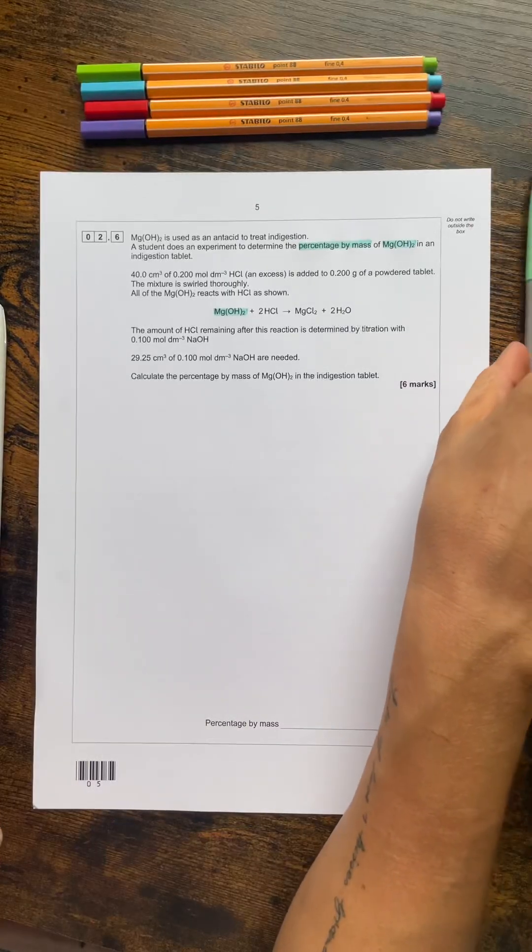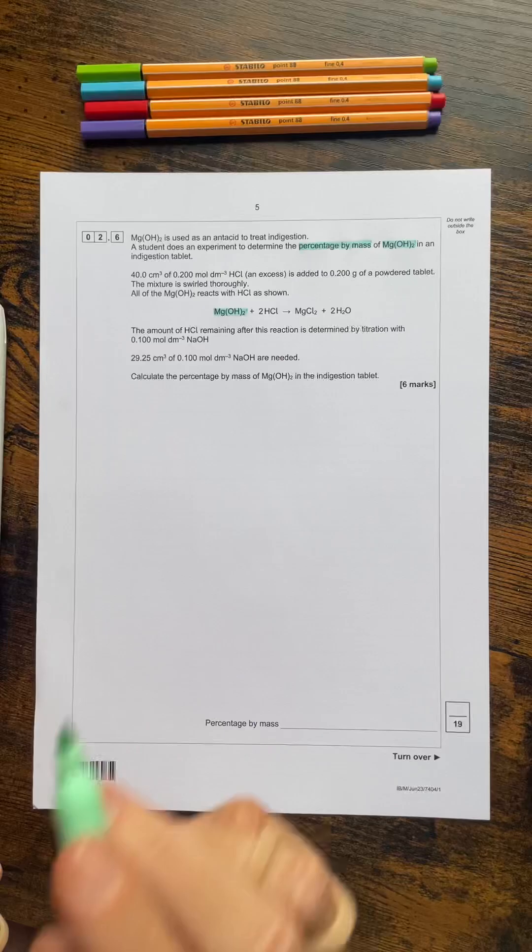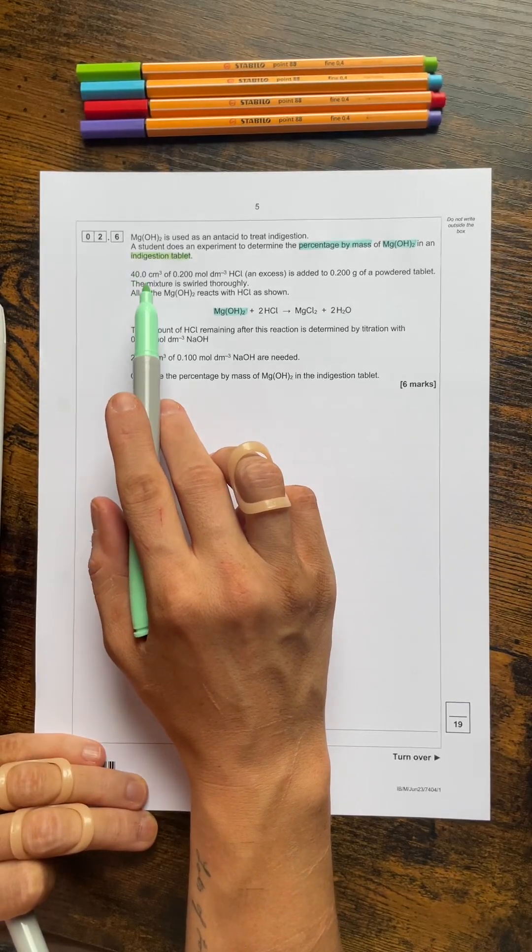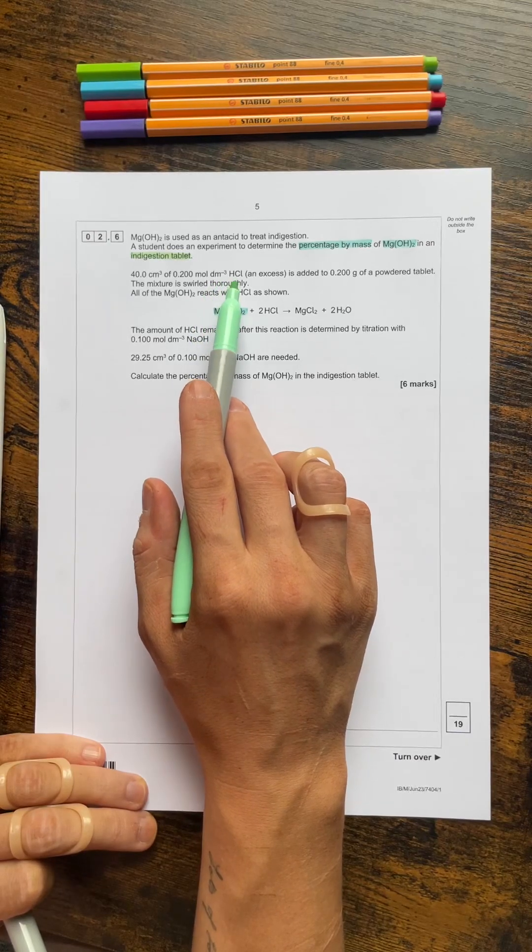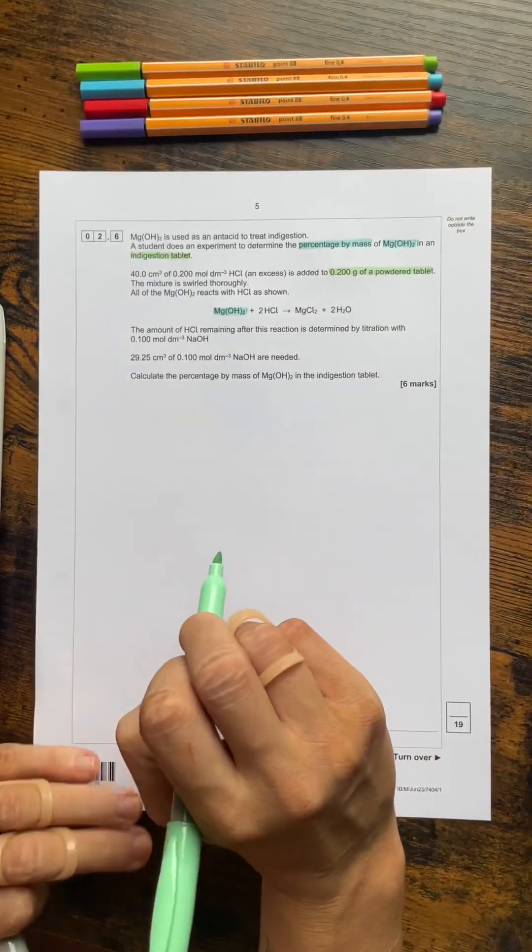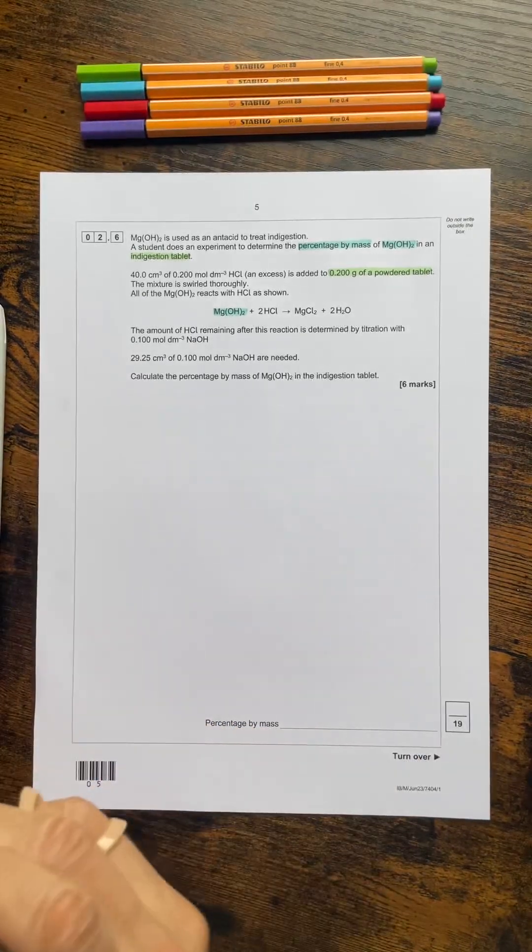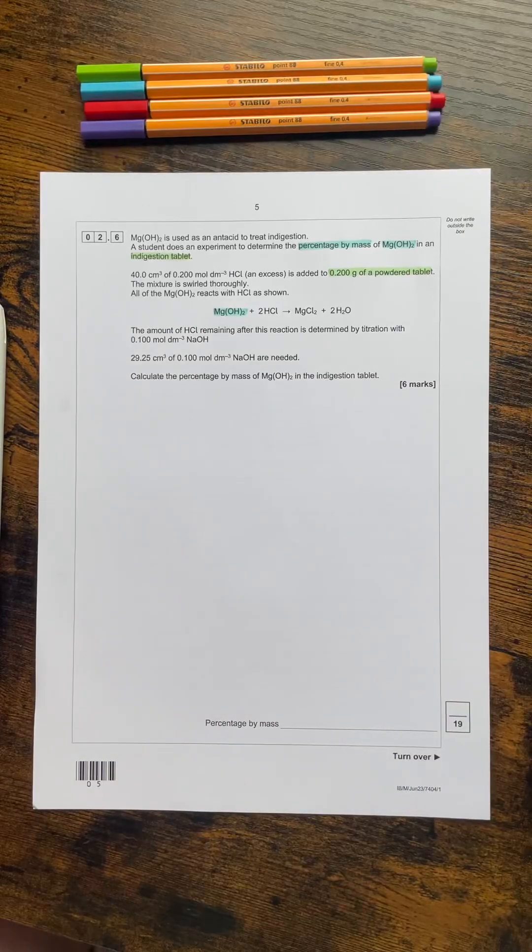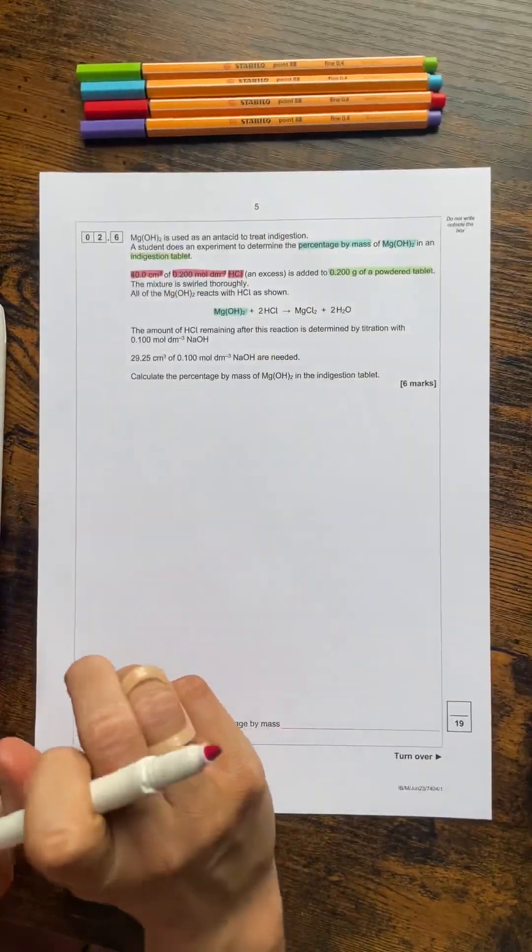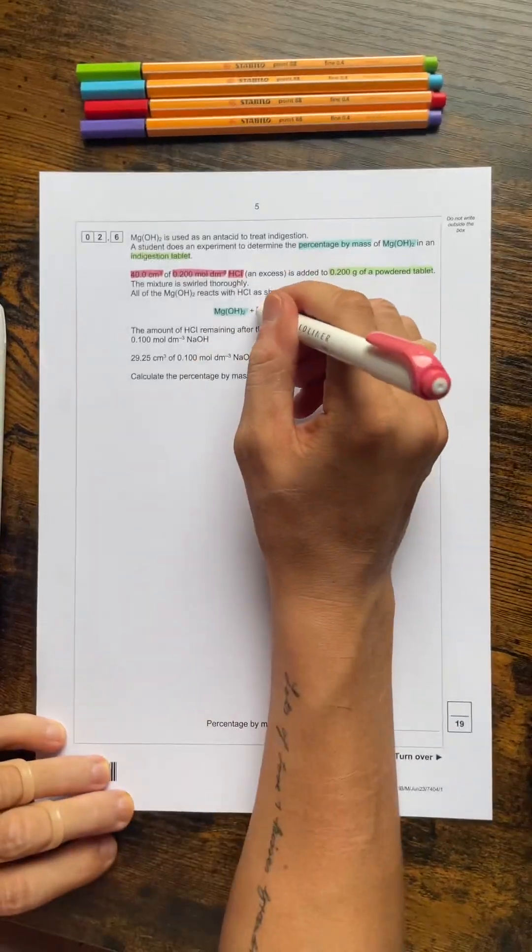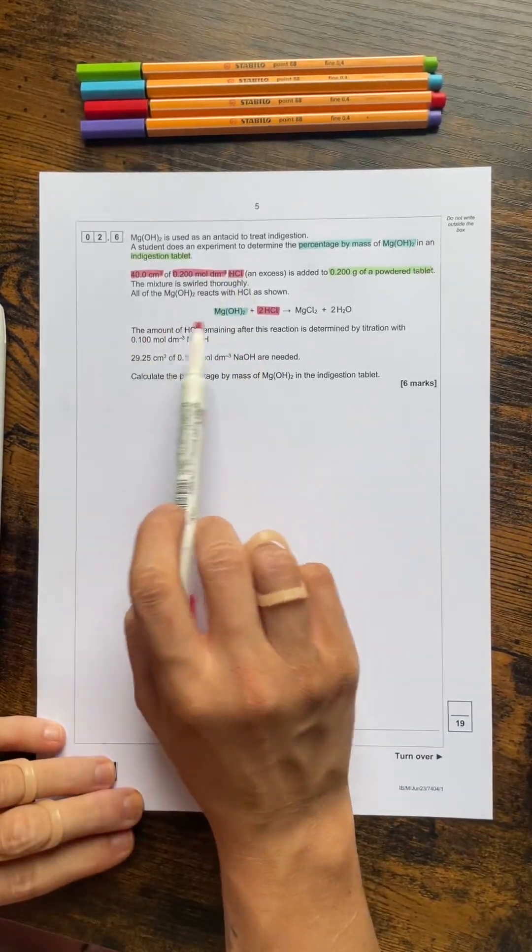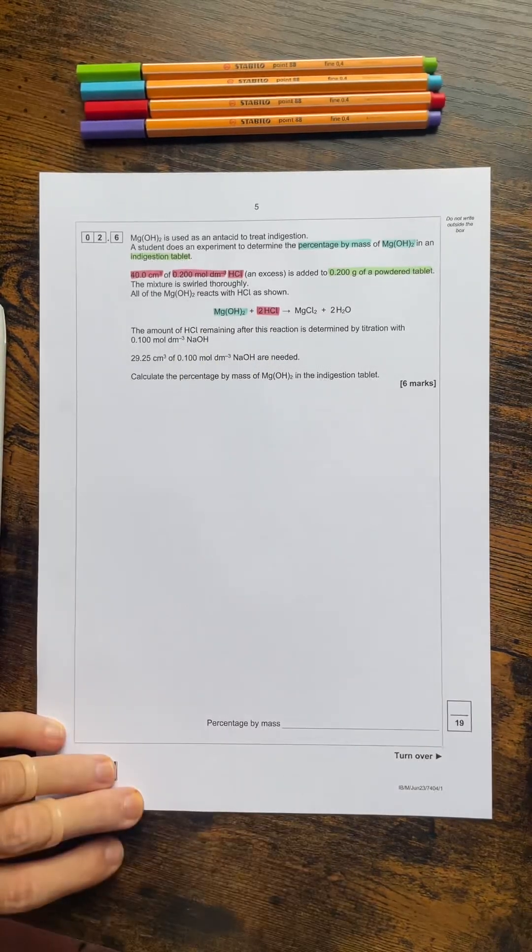The indigestion tablet is therefore likely to contain other things so that needs its own colour. So in green we've got the indigestion tablet and we are told that we are adding 40 centimetres cubed of a 0.2 mol per decimetre cubed hydrochloric acid solution which is in excess to 0.200 grams of one of those powdered indigestion tablets. Next I need my red because we talked about hydrochloric acid and I always do hydrochloric acid in red. So we've got a volume and we've got a concentration for the hydrochloric acid that was added to that powdered tablet. Now we're told it's in excess and that's important because we can then see after we've reacted the excess of hydrochloric acid with the magnesium hydroxide from the powdered tablet.